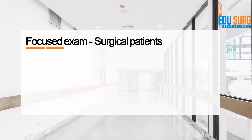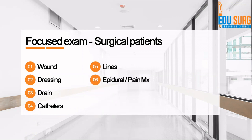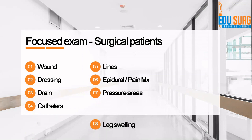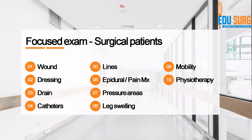For focused exam — this is just an example for surgical patients — you look at the wound and dressing; if the dressing is soaked it needs changing. Assess whether the wound is infected or healing, look at drain color and drain site, catheters, and neckline, which may need changing. If the patient is on patient-controlled analgesia or epidural, assess when to stop it and whether it is causing side effects. Look at pressure areas to avoid bed sores, check for leg swelling, nutritional deficiency, and do a quick nutritional assessment. Assess whether the patient is mobile or needs support, and check if physiotherapy is progressing well.